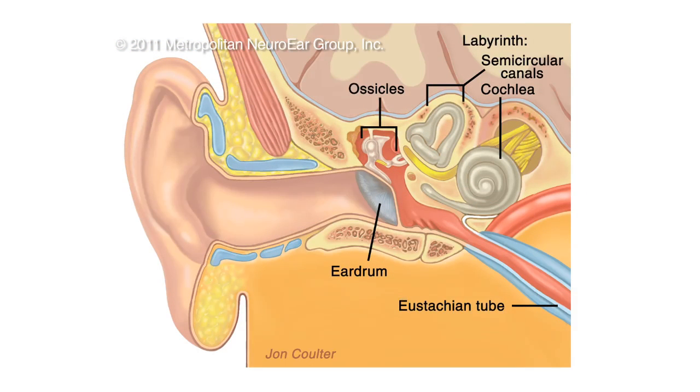and the contiguous structures around the temporal bone that include the temporal lobe, the cerebellum, the brain stem, the facial nerve, and the trigeminal nerve.